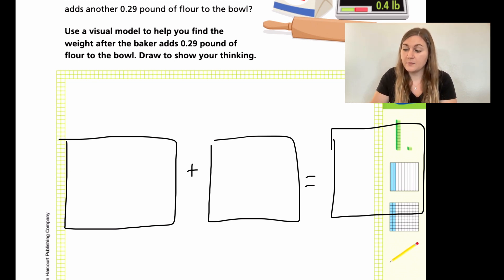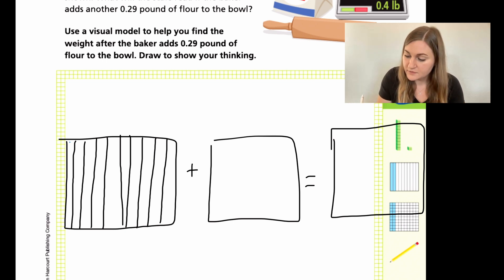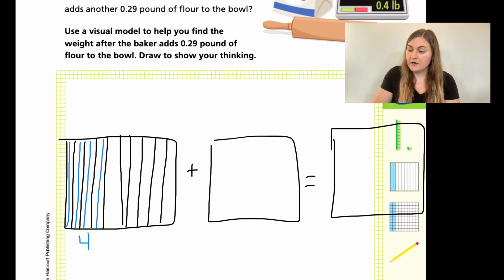Alright, so the first number, the pound that we're starting out with is 0.4. I know that that's in the tenths place value, so I am going to make my first square into tenths. So I'm just going to break it up into ten parts. So if I split it in half, I know that I can guide myself with fives. Two, three, four, five. And then one, two, three, four, five. And I am going to be coloring in the first four. So here's one, two, three, and four.